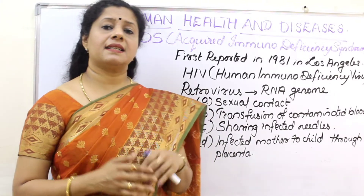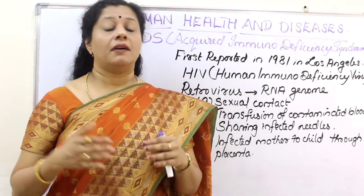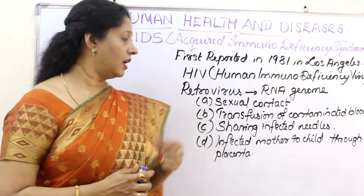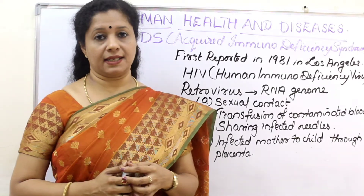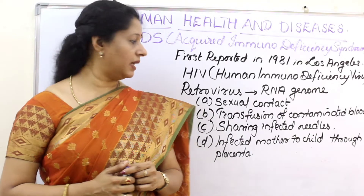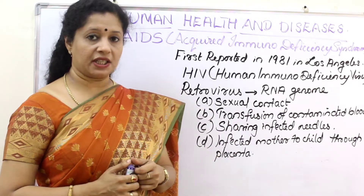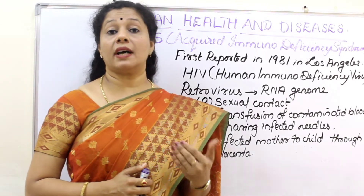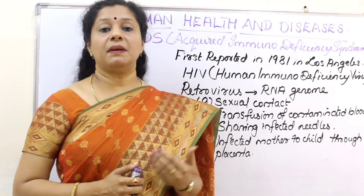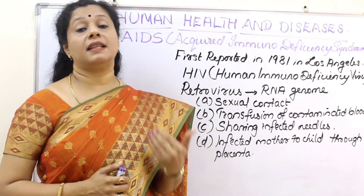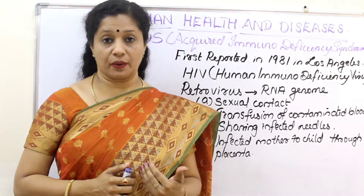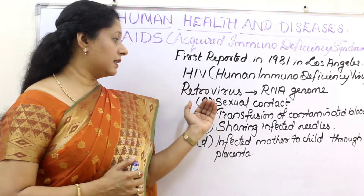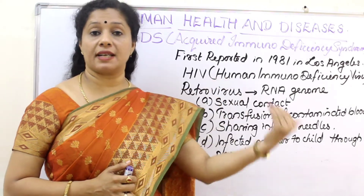Now let us discuss how AIDS can spread from one person to another. There are different means by which AIDS can spread: one is through sexual contact, another is transmission of contaminated blood, sharing of infected needles, and infected mother to child through the placenta. People with multiple sex partners or sex workers are more prone to AIDS compared to normal people — that is the main mode of transmission of this disease.